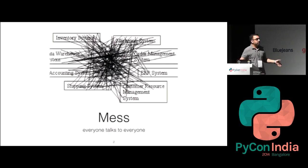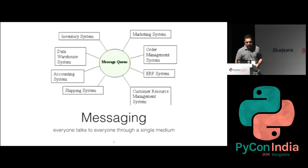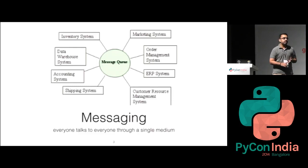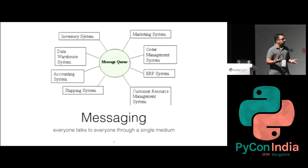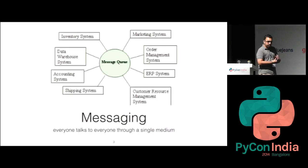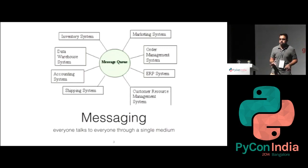If you apply a little bit of logic and apply the principles of messaging, you end up with an architecture where all those systems or parts of the application speak through a common message queue. You've all heard of RabbitMQ, Redis, or any other AMQP broker — these are messaging brokers and queues available with APIs in various languages including Python, very simple to integrate into your applications.